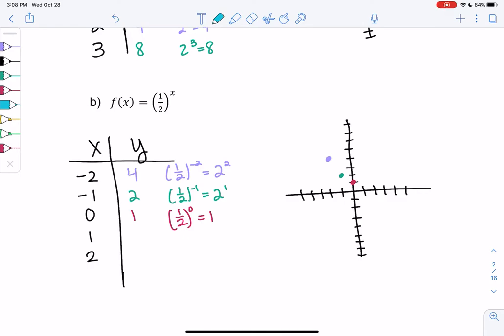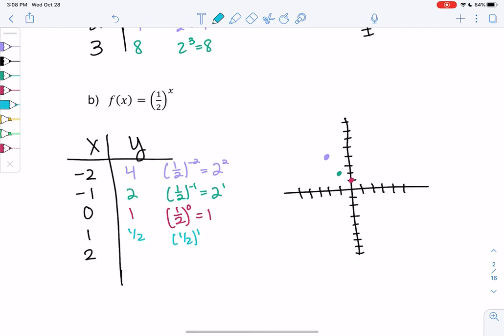1 half to the 1 power would be just 1 half. So 1 and 1 half. And then finally, 1 half squared is 1 fourth.